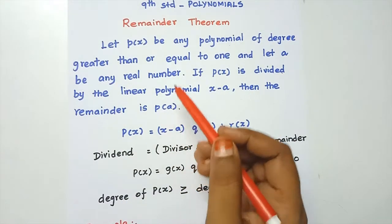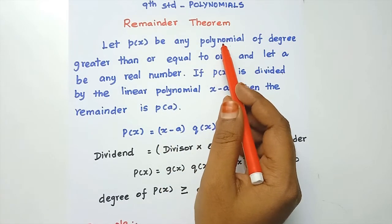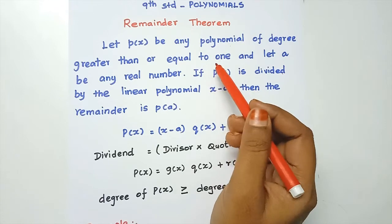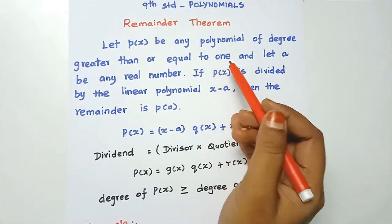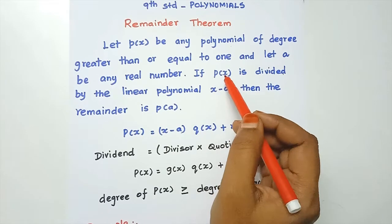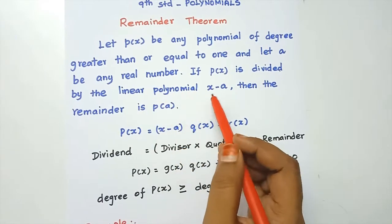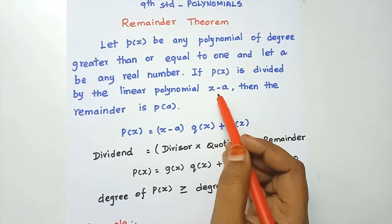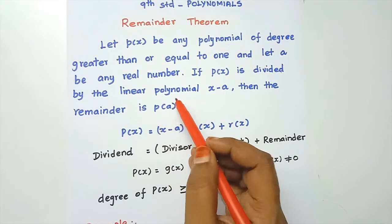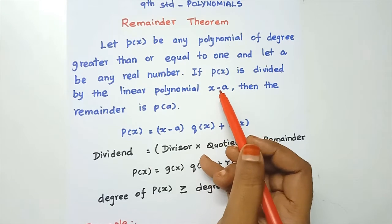Now, p of x is a polynomial of degree greater than or equal to 1. This is a real number. Now, p of x is divided by a linear polynomial. If we ask the remainder, we use the linear polynomial x minus a.